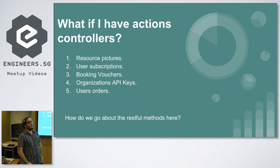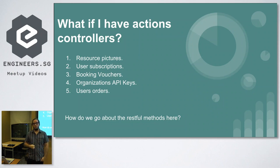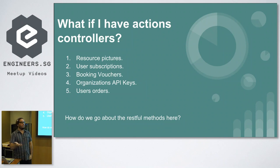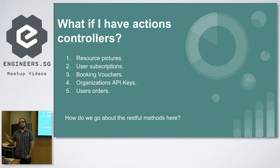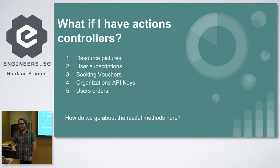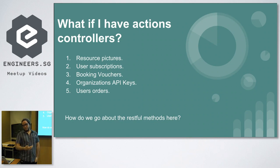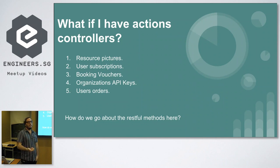The question that comes around is: what if we have a user resource and we need to do some operations upon it? Retrieving, saving, and editing users is straightforward. But what about actions upon this user — like a subscription, booking vouchers, or if we have a given organization that connects to our API and we need to serve keys to these APIs? How do we go about these designs?